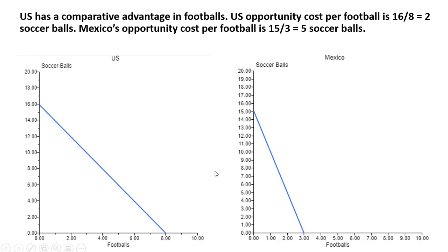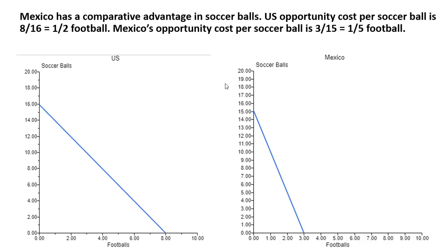Now let's look at this from the perspective of producing soccer balls — we're going to see that Mexico has a comparative advantage in soccer balls. For the US, the opportunity cost to produce a soccer ball is going to be half a football. To get the opportunity cost of producing the thing on the vertical or y-axis, you take the horizontal intercept and divide it by the vertical intercept. So it's 8 divided by 16, or half a football.